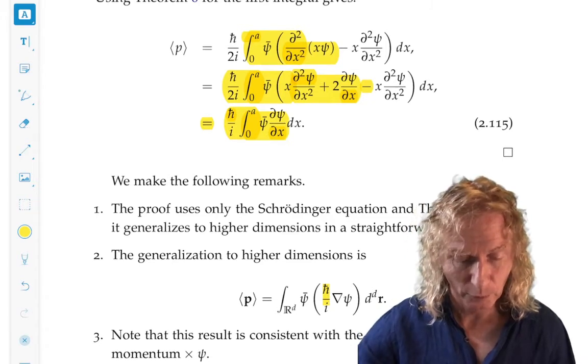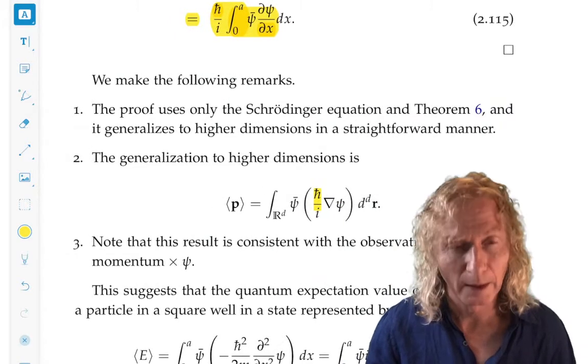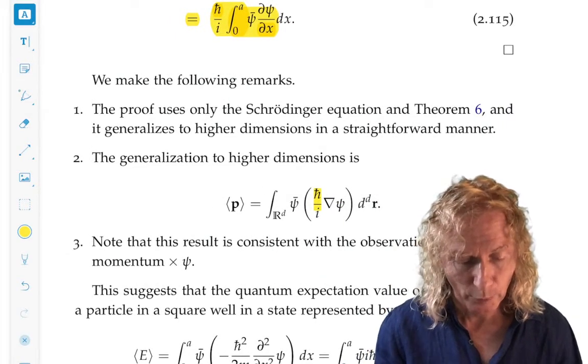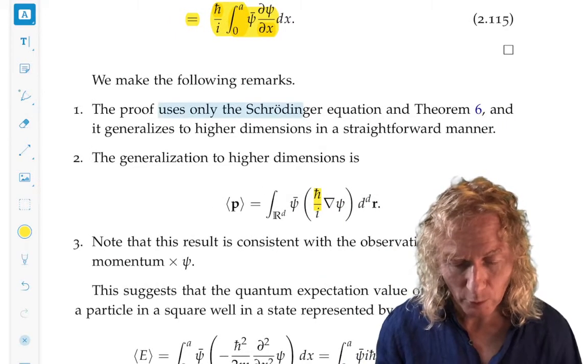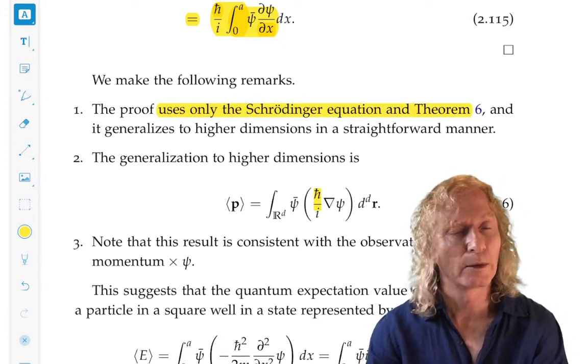Okay, this was done for the square well. But it's important to realize that the proof used only the Schrödinger equation and hermeticity. Nothing else.